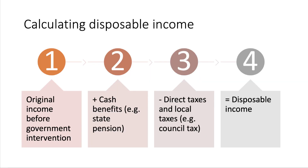Here's the process for calculating disposable income. We take people's original income before any government intervention — that includes wages and salaries, interest from savings, rental income, or dividend income from shares. That is original income. We then add on entitlement to and claiming of cash benefits, for example the state retirement pension. We then subtract direct taxes and local taxes, such as the council tax.